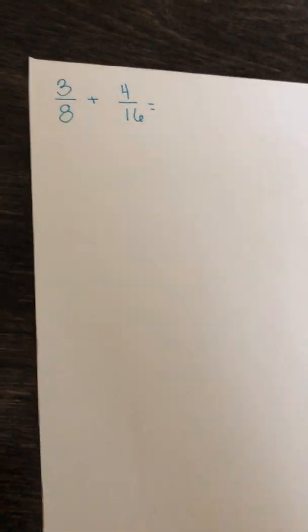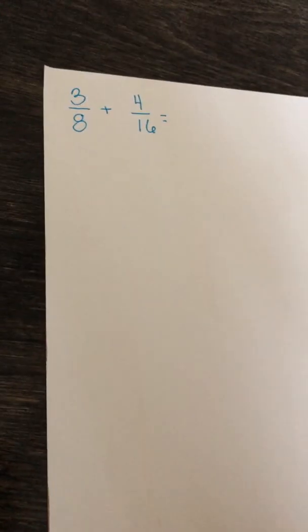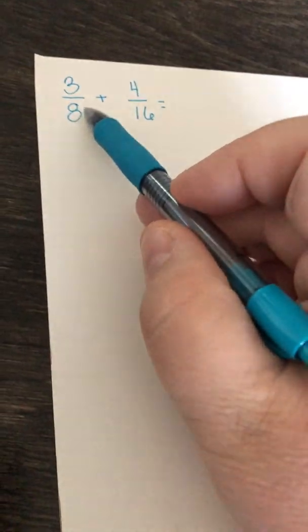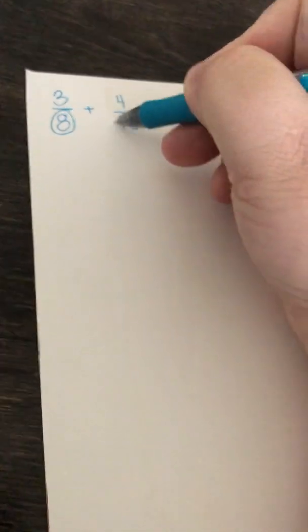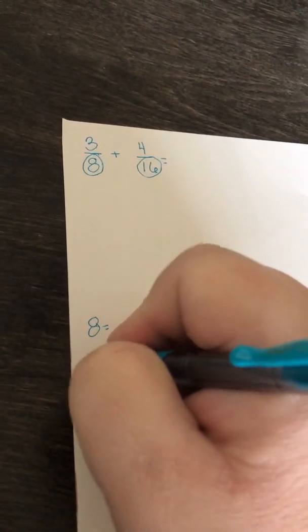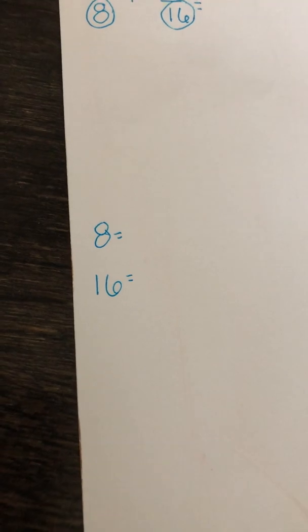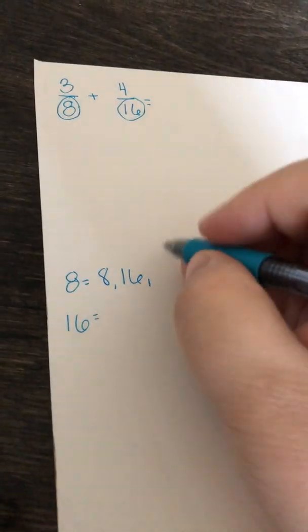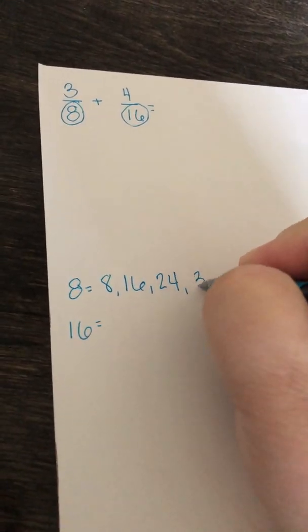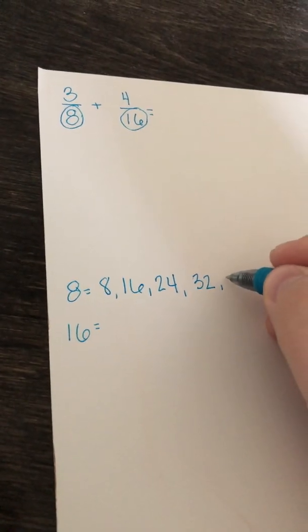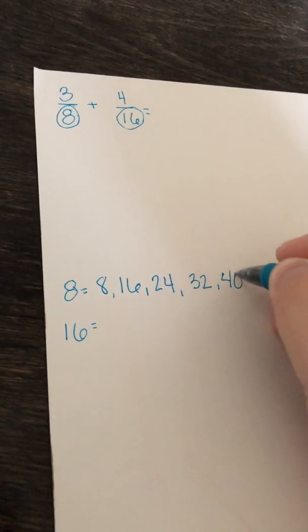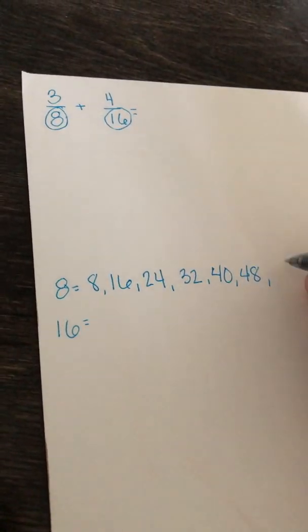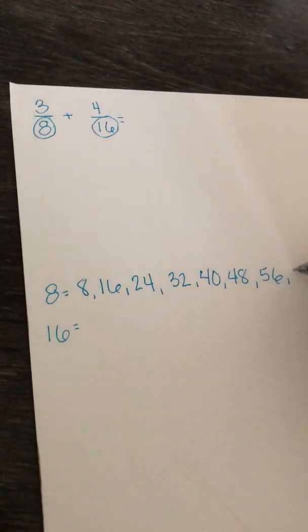I wonder what I need to do in order to make them the same. Well, wonder no further — we are going to fix that. Our next step is to take our denominators and find the first multiples. So we're going to find 8 and we're going to find 16. So let's do 8, 16, 24, 32, 40, 48, 56, 64. I'm going to stop there.